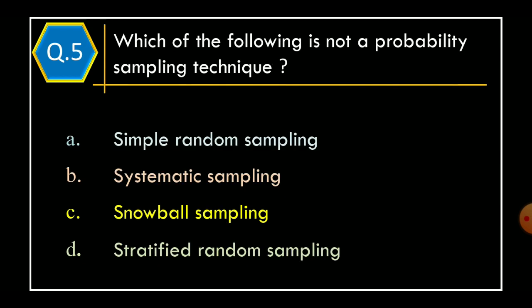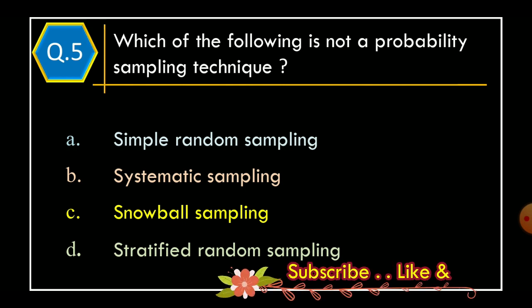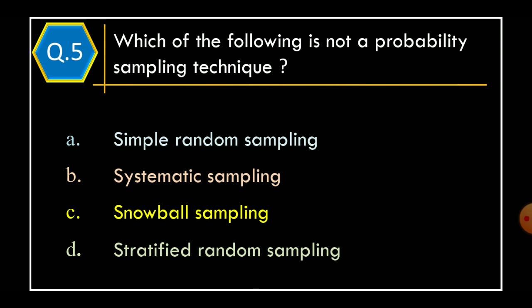Question 5. Which of the following is not a probability sampling technique? Option A, Simple Random Sampling. Option B, Systematic Sampling. Option C, Snowball Sampling. Option D, Stratified Random Sampling. And correct option is Option C, Snowball Sampling.